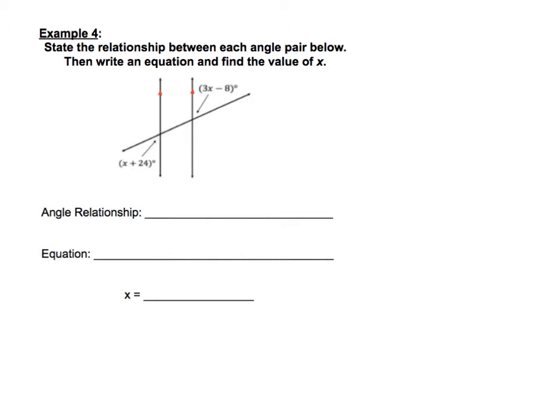These are also outside the parallel lines, but they're on opposite sides of the transversal, which makes them alternate exterior angles. We know that alternate exterior angles are congruent to each other, so they have the same measure.